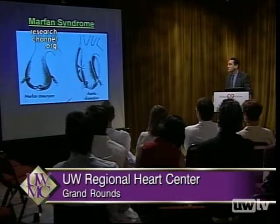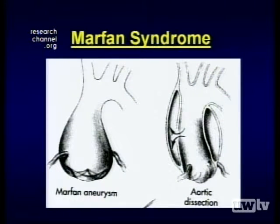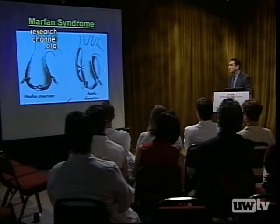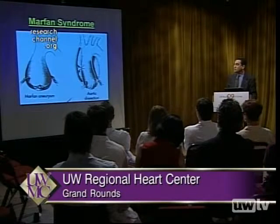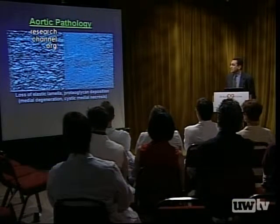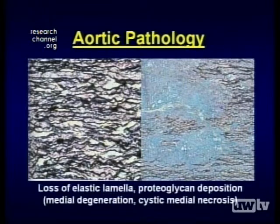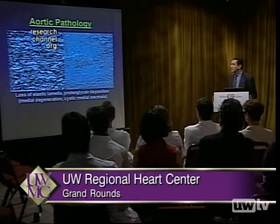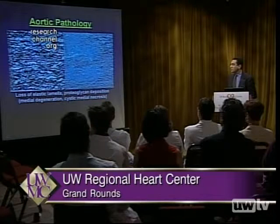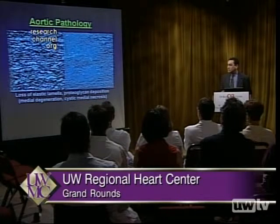In Marfan syndrome, we are very aware that we cannot just substitute a tube graft in the ascending aorta. Even in the presence of aneurysmal disease, and especially in the presence of aortic dissection, the sinuses are very heavily involved and the walls of the aorta are not normal. Microscopically, a normal aorta shows elastic lamina and interspersed smooth muscle cells, but in the presence of Marfan syndrome there is a loss of elastic lamella and proteoglycan deposition, which makes the wall of the aorta quite weak. This was termed medial degeneration or cystic medial necrosis, and this relative weakness of the aortic wall, if left behind, can eventually cause problems in the future.